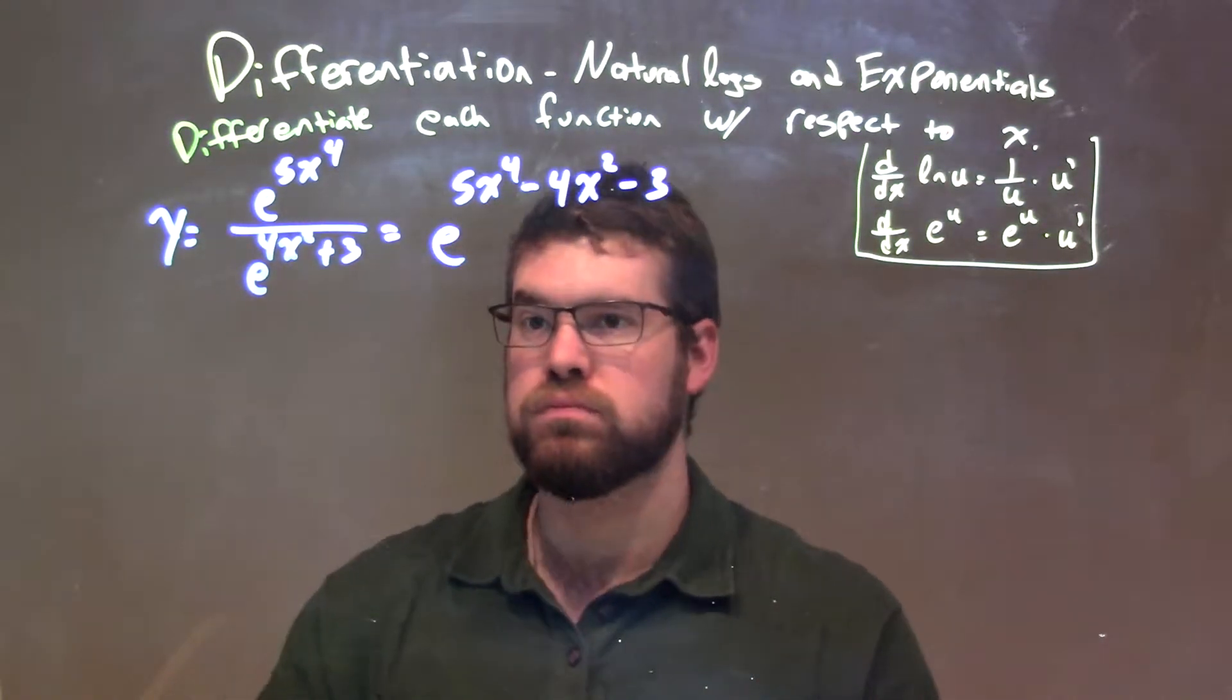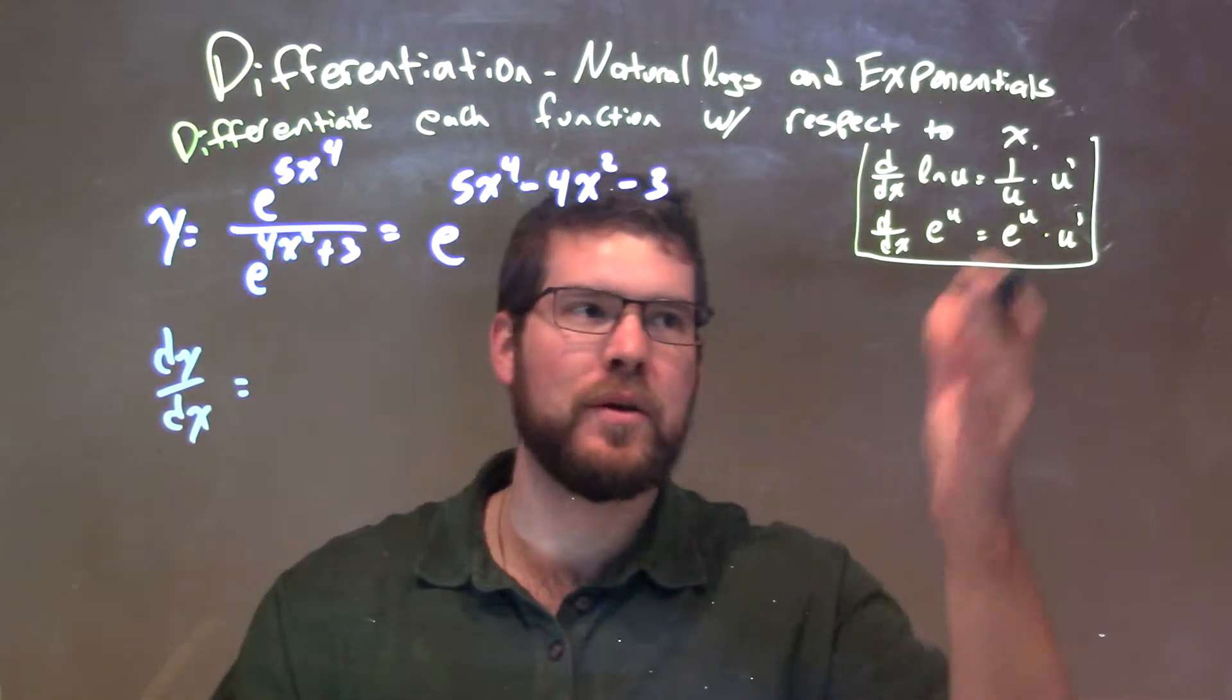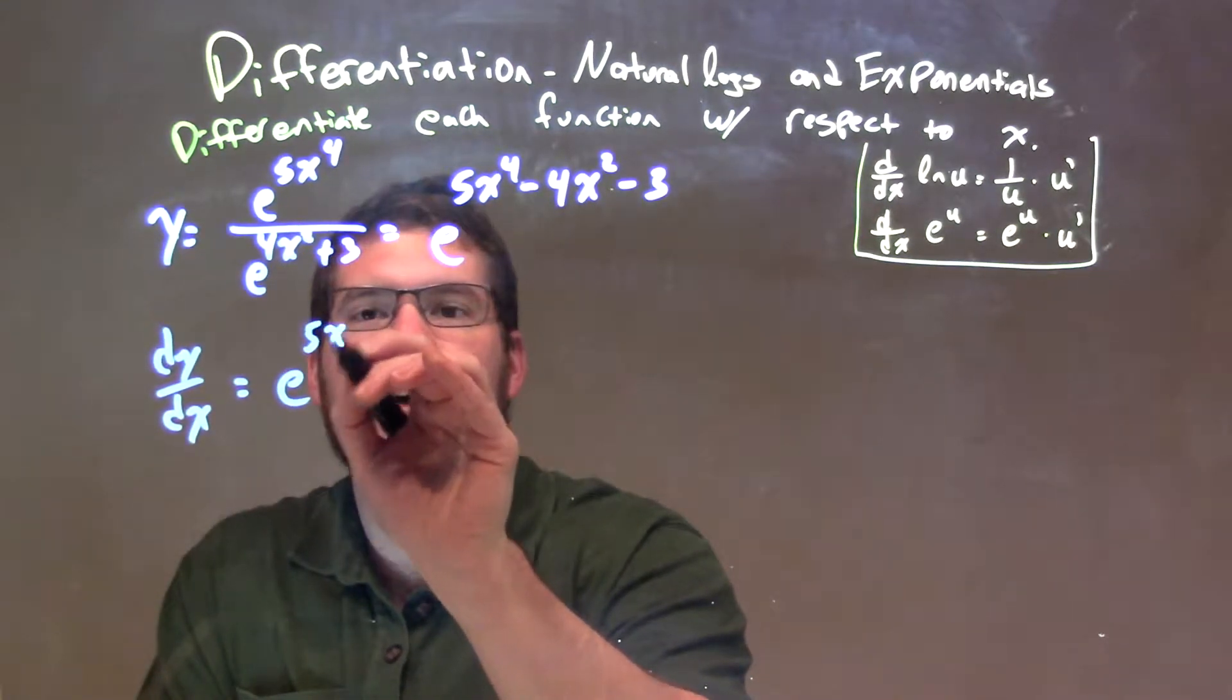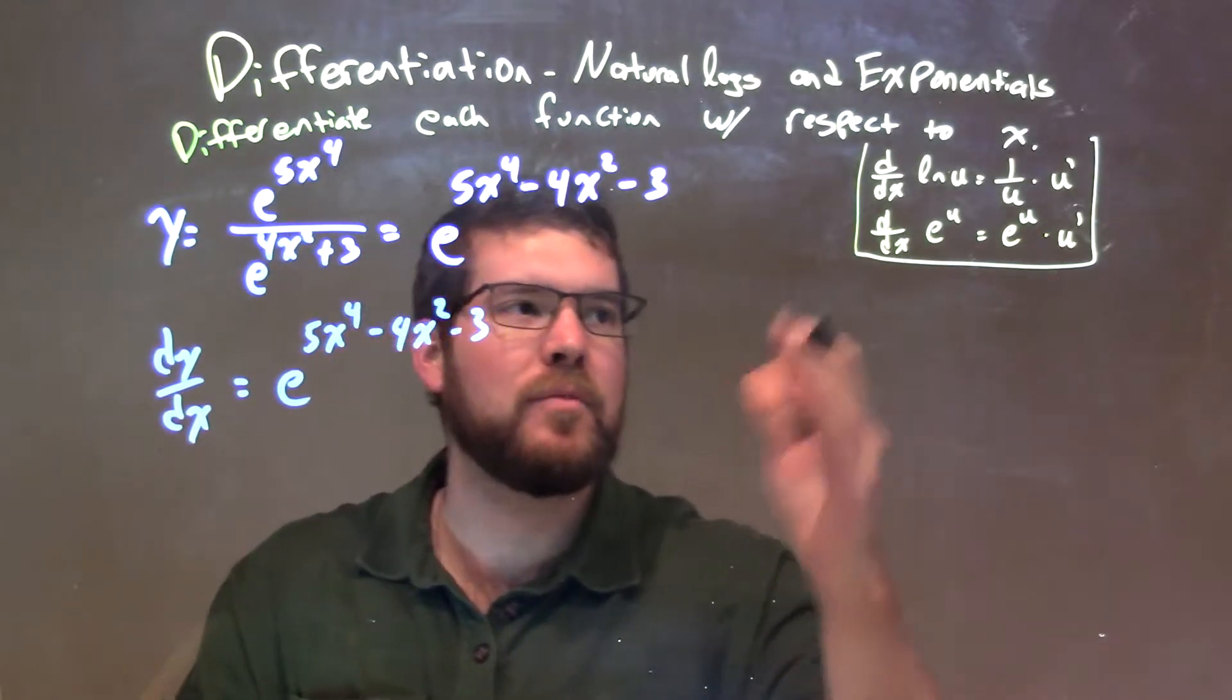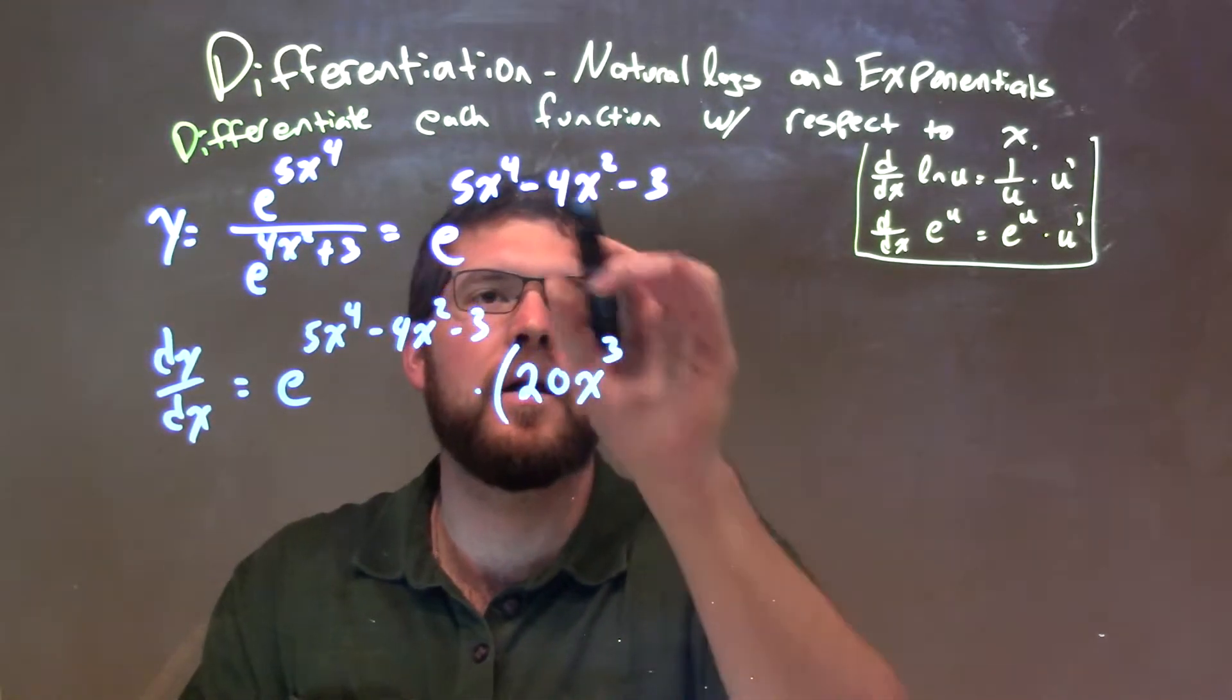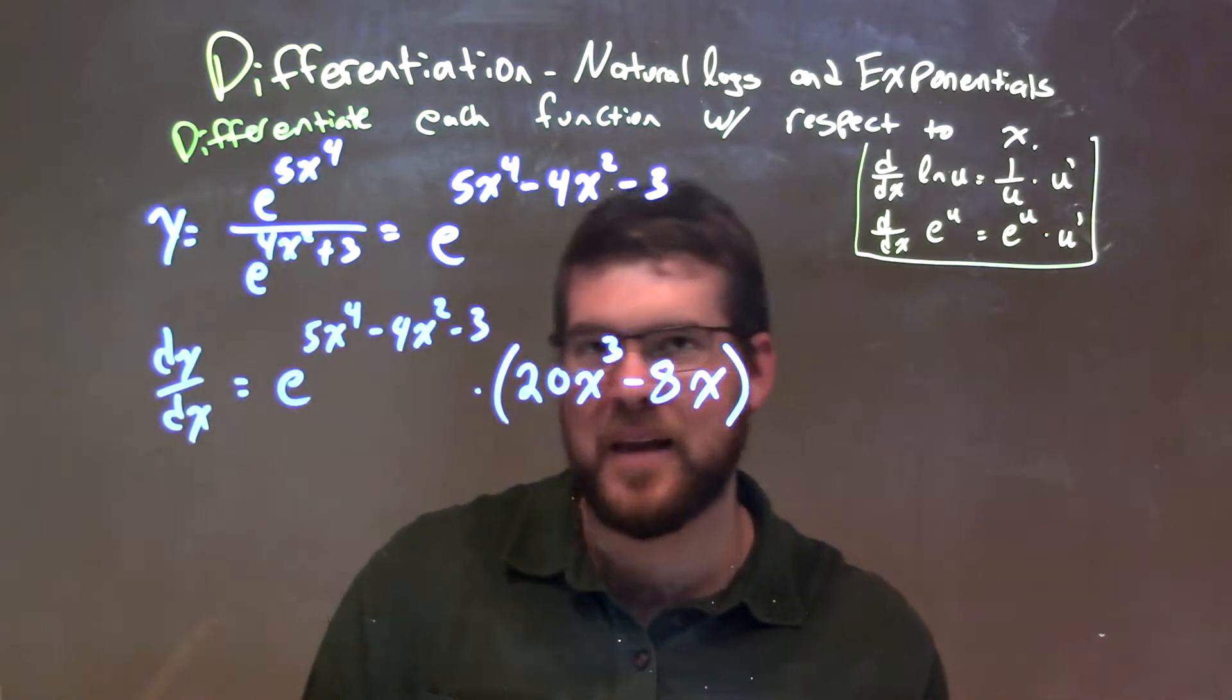So let's take the derivative, actually. dy/dx here. Well, our rules with derivatives is e to the u times u prime. We have e to the 5x to the 4th minus 4x squared minus 3 power times the derivative of that exponent. 4 comes down times 5 is 20, x to the 3rd power, and then minus here, 2 times 4 is 8, 8x. That's it. The 3 don't really worry about because the derivative of negative 3 is 0.